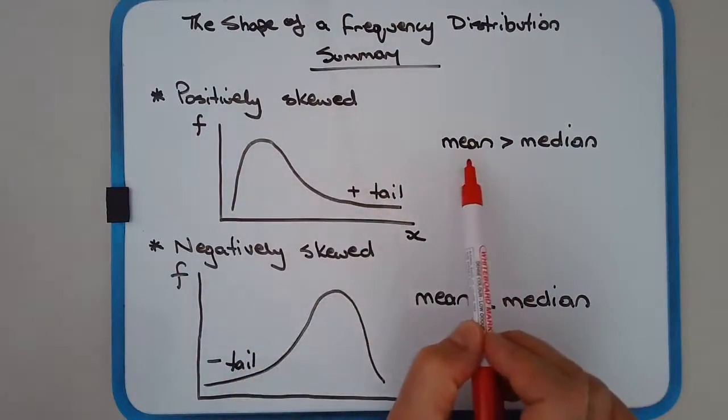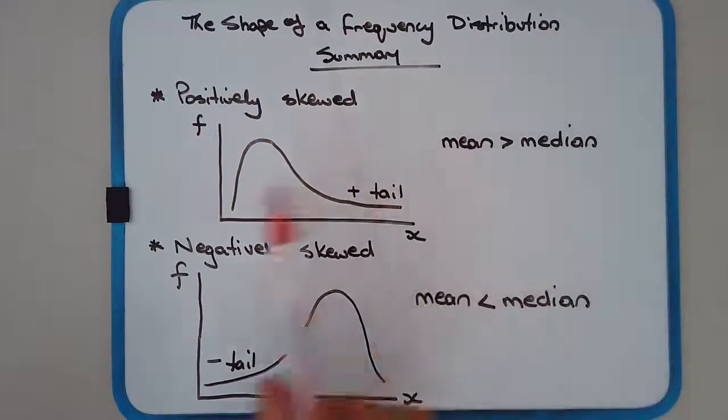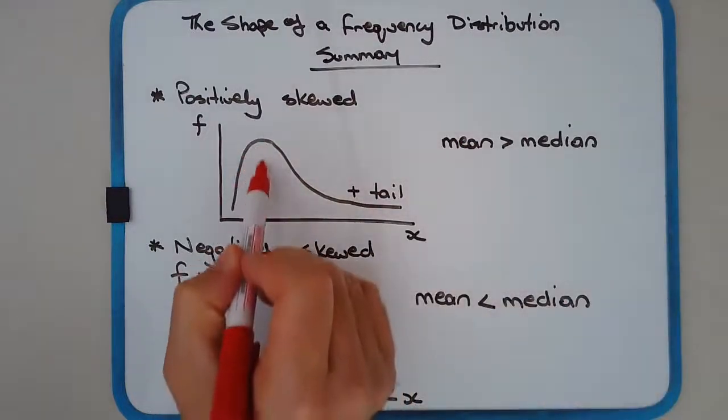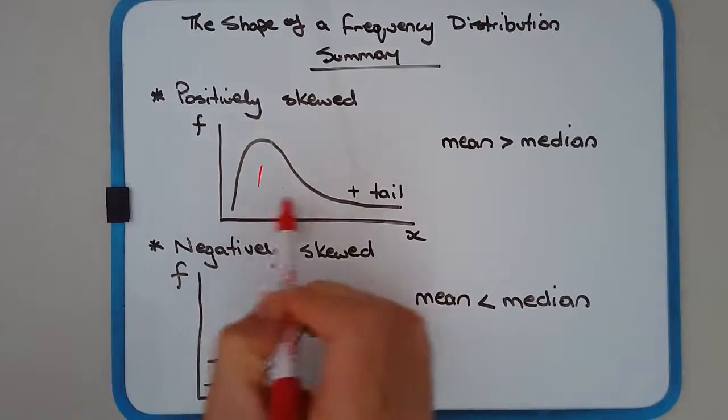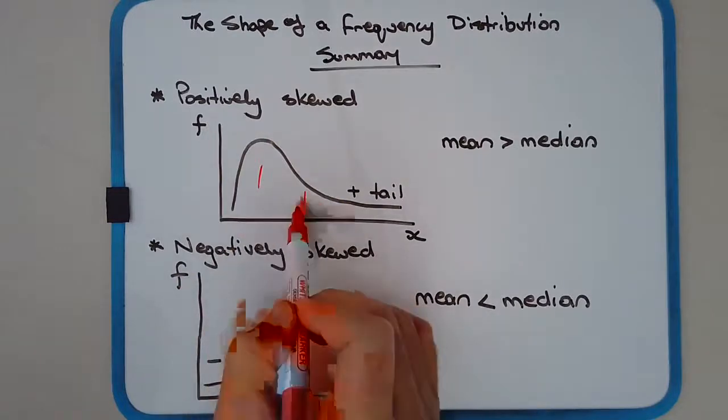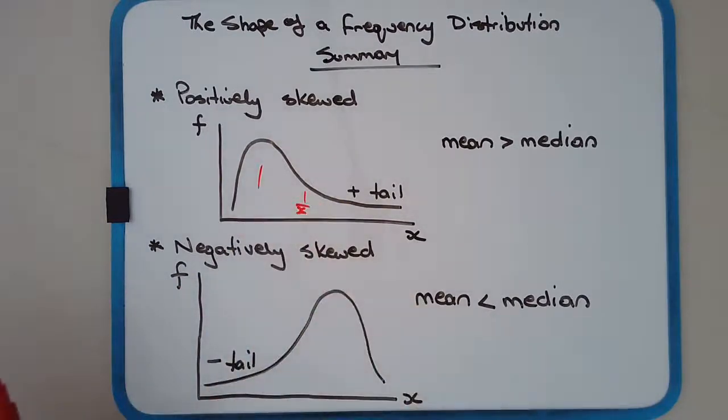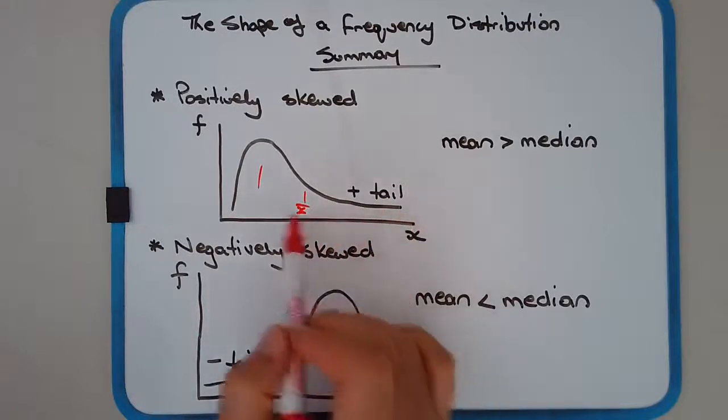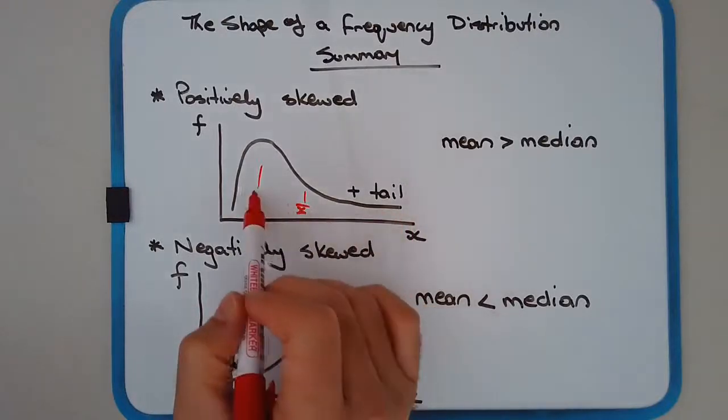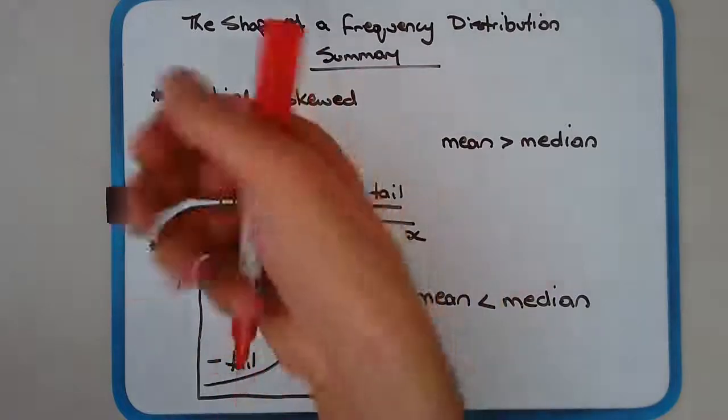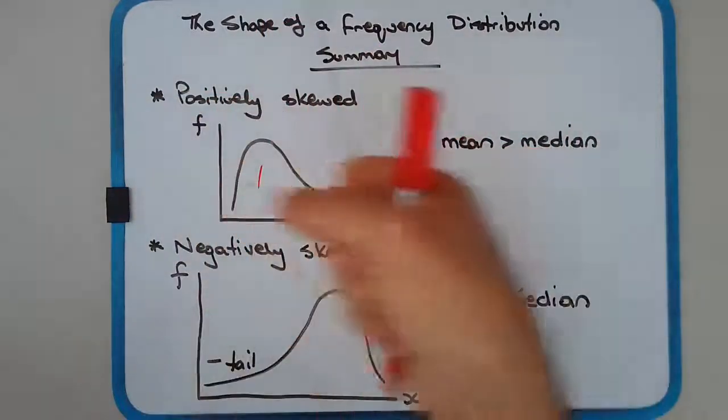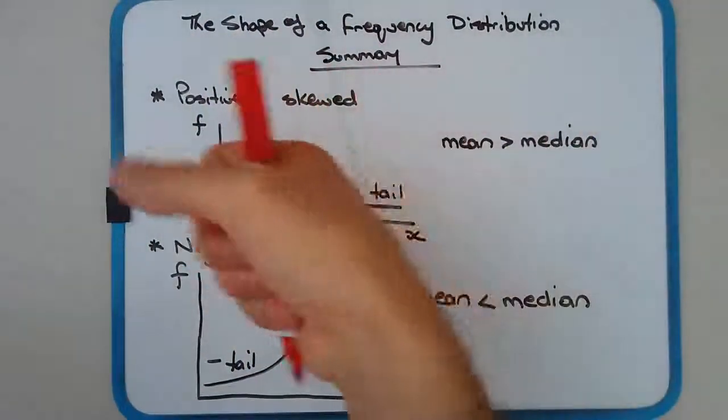And what tends to happen is that the mean is generally greater than the median. So the median would be somewhere, maybe somewhere here, and the mean might be a bit further up. And the reason for that is because of these high values, the high values affect the mean, doesn't affect the median so much, and it tends to pull the mean toward the positive side or toward the positive tail.